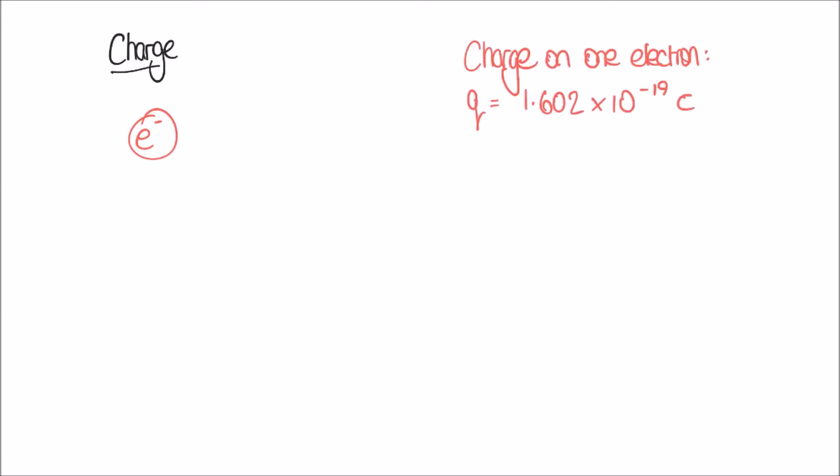The charge on an electron is very very small: it's 1.602 times 10 to the minus 19 coulombs. I've given it the letter lowercase q to denote the charge on just one electron. Now we're going to consider two electrons. Because they both carry the same negative charge — you'll notice the minus sign next to each — they will repel one another, just like the like poles of a magnet. This produces a force F between the two particles.